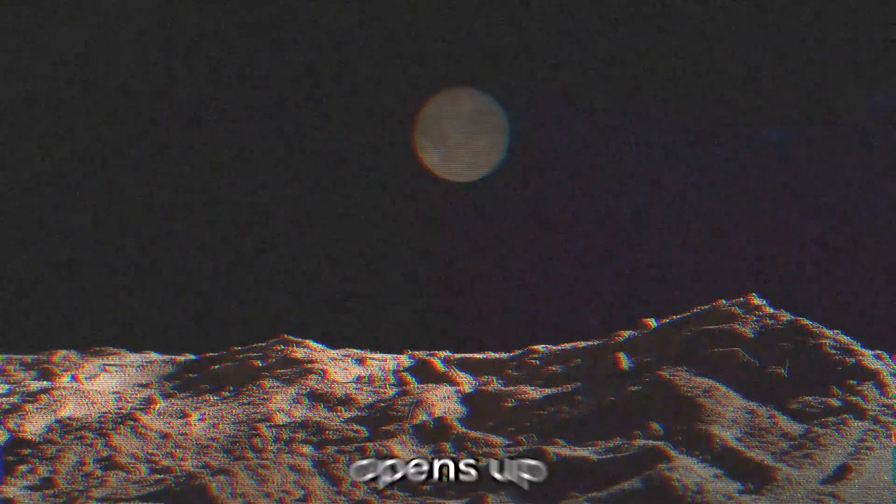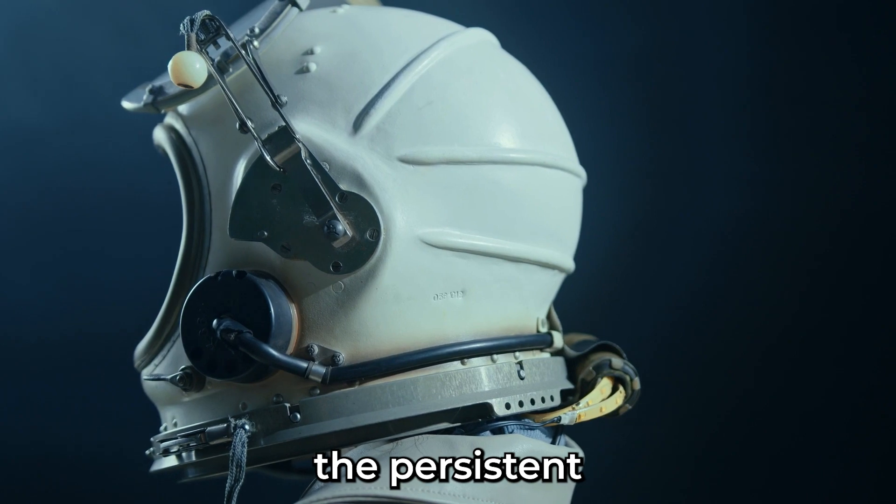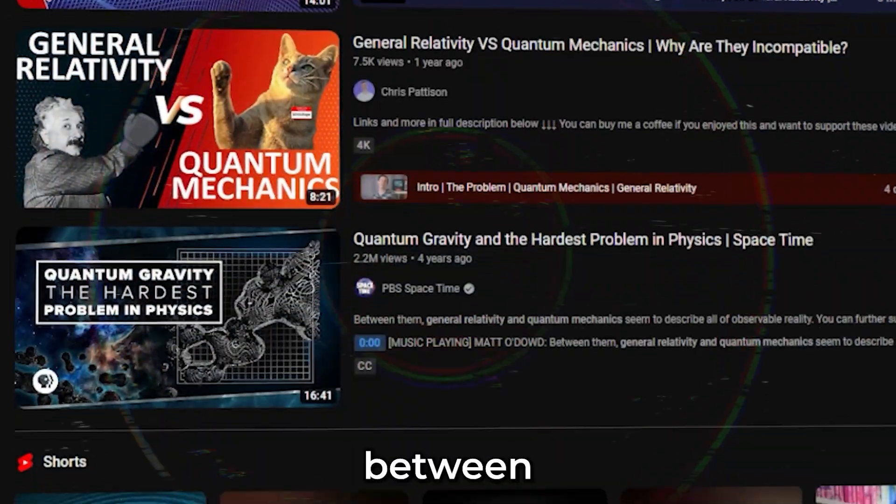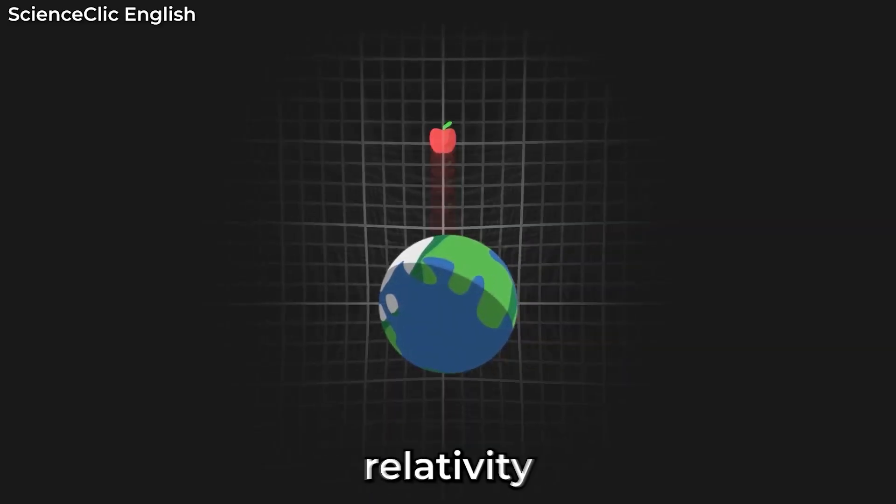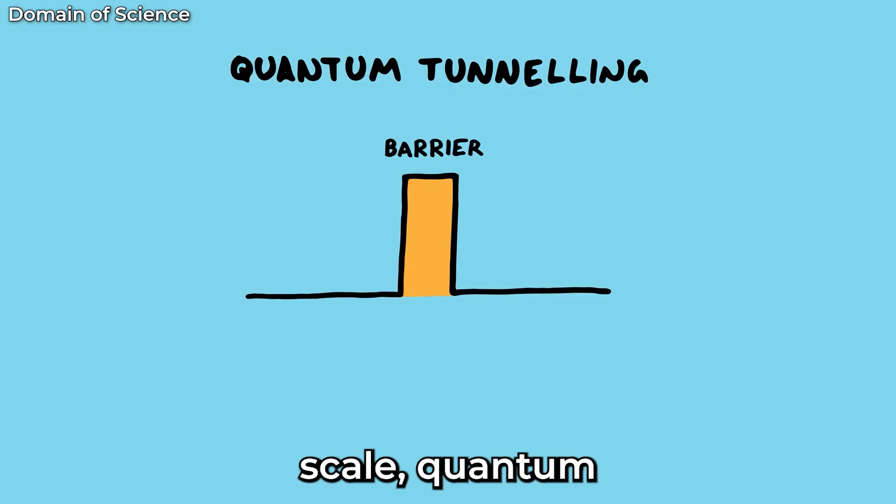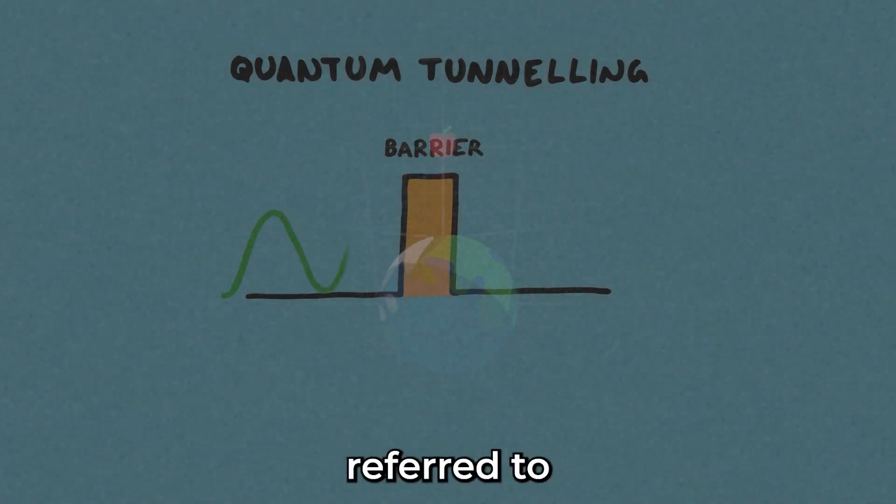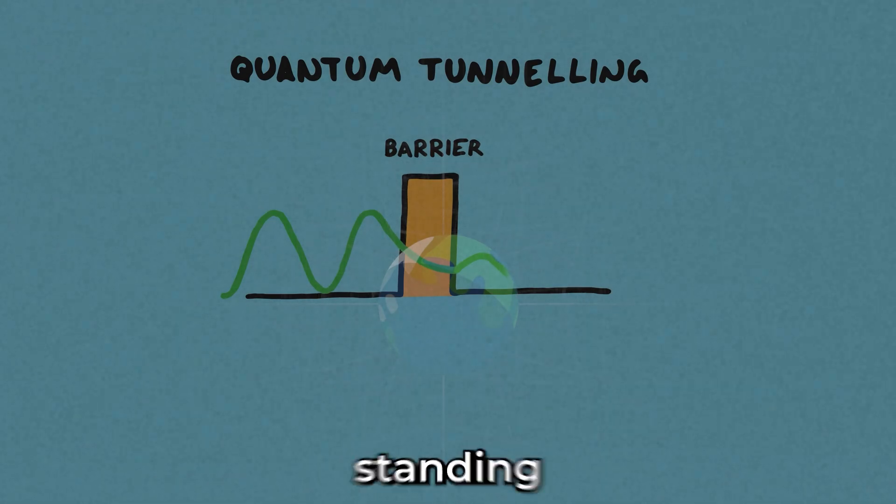This hypothesis opens up intriguing possibilities for combining some of the persistent puzzles in modern physics. One of them is the inherent incompatibility between general relativity and quantum mechanics. While general relativity successfully describes the behavior of gravity on a cosmic scale, quantum mechanics governs the behavior of particles at the subatomic level. Merging these two theories into a single framework, often referred to as a theory of quantum gravity, has been a long-standing challenge.